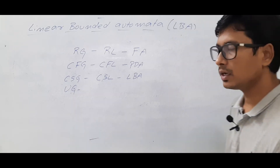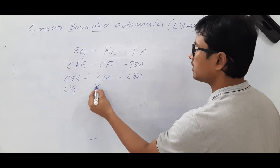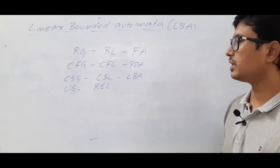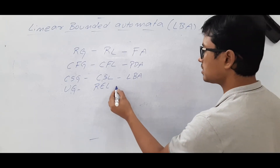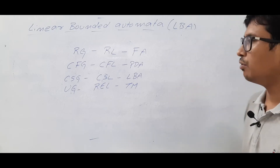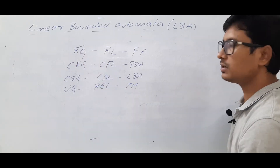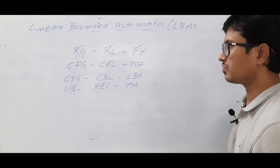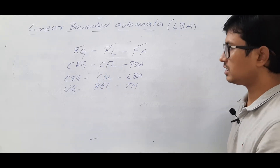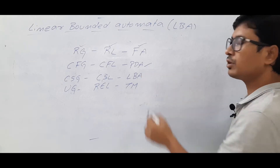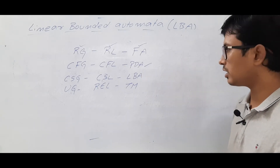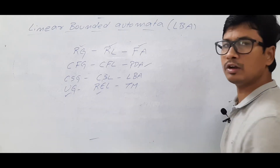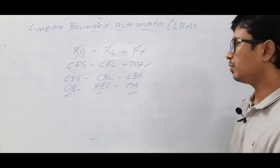We have unrestricted grammar, which can generate recursive enumerable languages and can be modeled using a Turing machine. We have already discussed regular grammar, regular languages, and how to model using finite automata. We have already discussed context-free grammar, context-free languages, pushdown automata — including deterministic and non-deterministic pushdown automata — and also unrestricted grammar, recursive enumerable languages, and Turing machine.